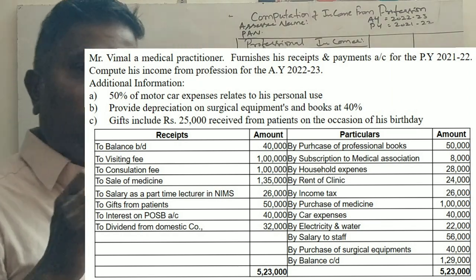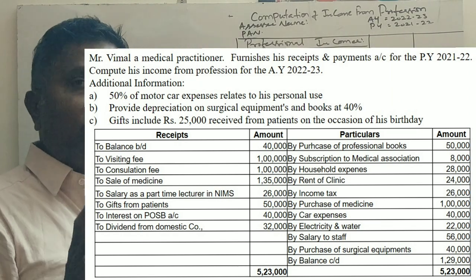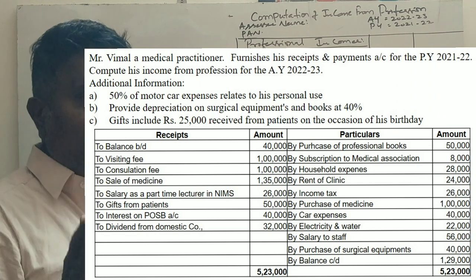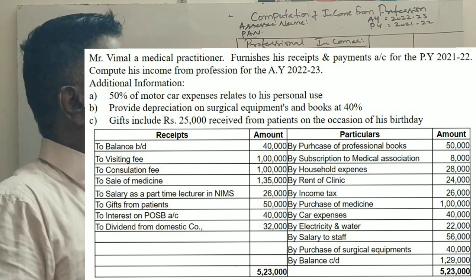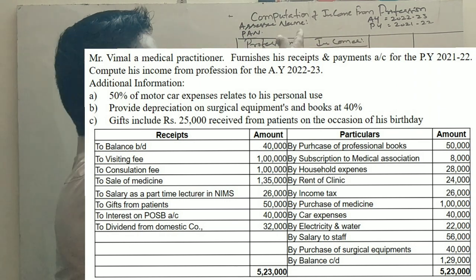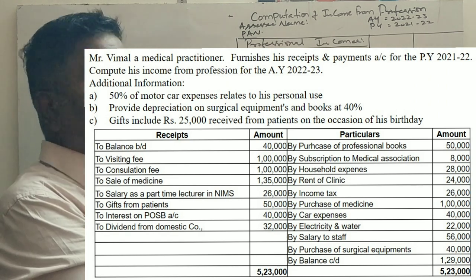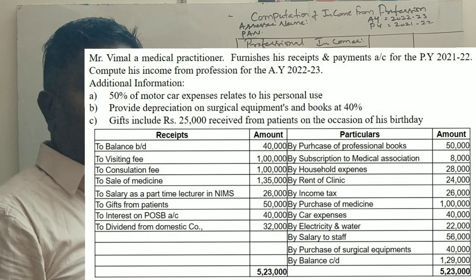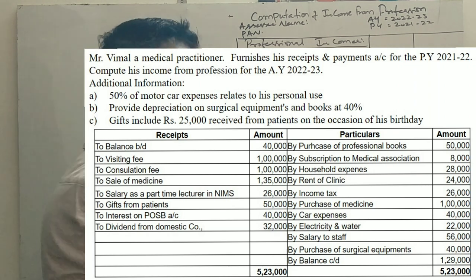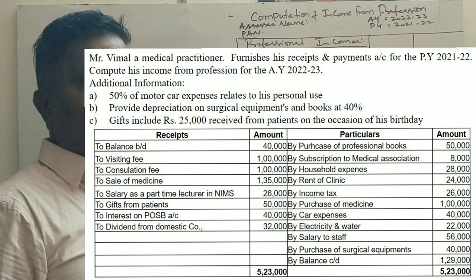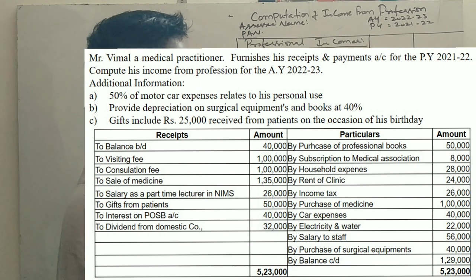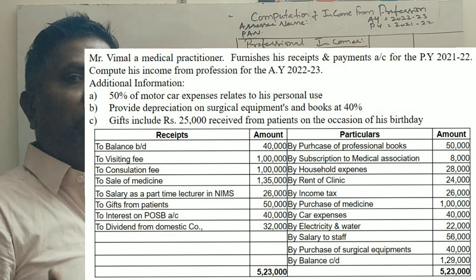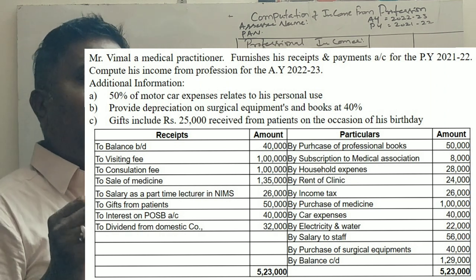This is a question from Bank Lore North University 2022 question paper, worth 15 marks, on income from profession. The computation involves professional income minus professional expenses to arrive at the total professional income.